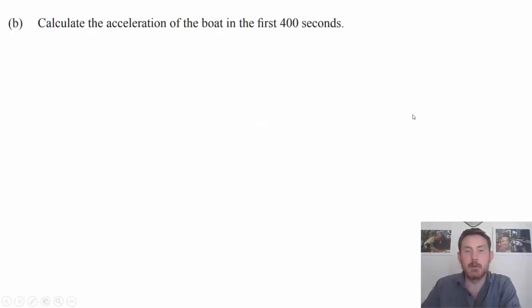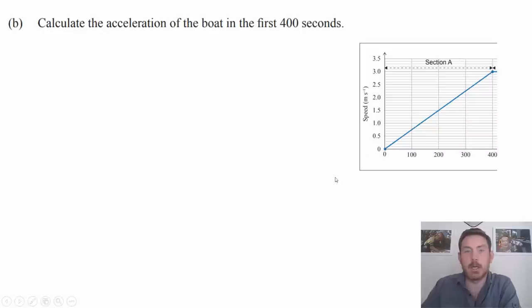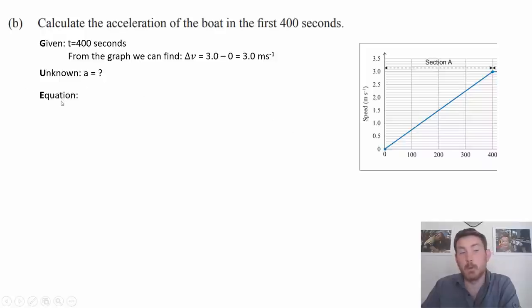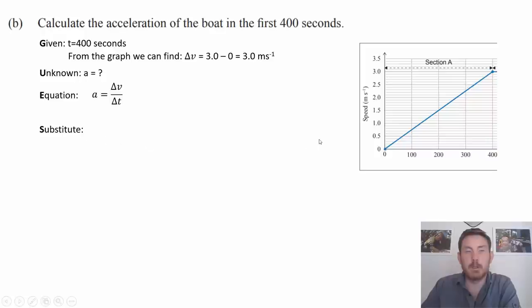For part b, what's the acceleration of the boat in the first 400 seconds? We'll use the GUESS method. Given: time is 400 seconds, and from the graph the change in speed is three minus zero, which is three meters per second. Unknown is acceleration. The equation is a equals change in velocity over change in time. Substituting gives us three over 400, which equals 0.0075 meters per second squared. That is an achieved level response.